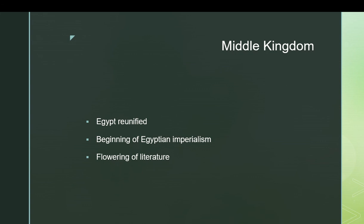This is the beginning of Egyptian imperialism. In the Old Kingdom, the Egyptians would occasionally go out and beat up some nomads and take their stuff, but this is when the Egyptians start actually annexing non-Egyptian land. They build a whole bunch of fortresses in Nubia, controlling those trade routes and mining colonies. This is also a period of a great flowering of literature — a lot of the most famous stories of ancient Egypt were originally written down in the Middle Kingdom: many of the wisdom texts, the famous Story of Sinuhe, the Story of the Shipwrecked Sailor. This is why we study Middle Egyptian — it is the language of the Middle Kingdom, and because so much interesting literature was written in it, it is the primary version taught to beginners in Egyptology.